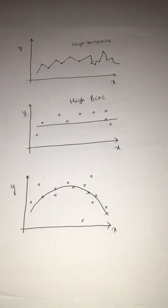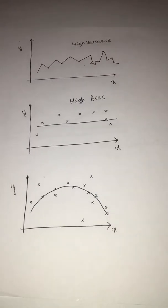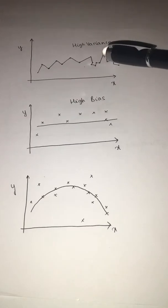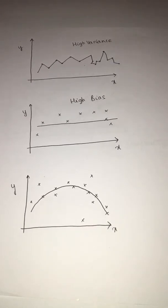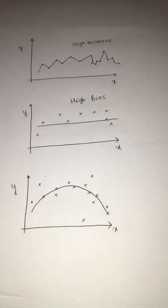If you try to reduce the bias lever, the variance lever increases. On the other way, if you try to increase the bias lever, the variance lever goes down. What we want is a case where bias is comparatively low — this is where it has the lowest bias — and even the variance is low.